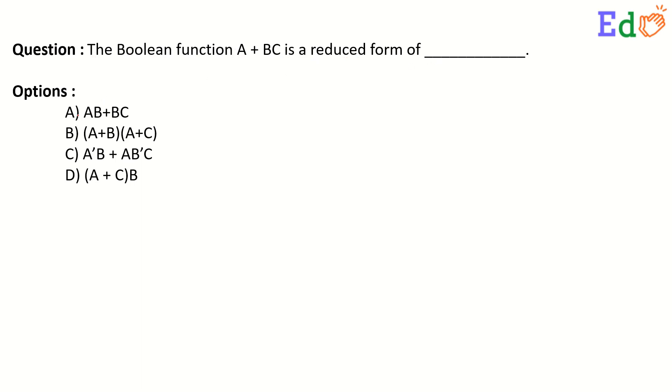The options are: A, AB plus BC; B, (A plus B) dot (A plus C); C, A complement B plus AB complement C; and option D, (A plus C) whole dot B.